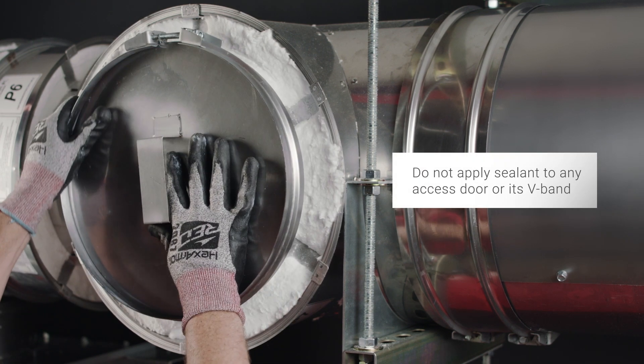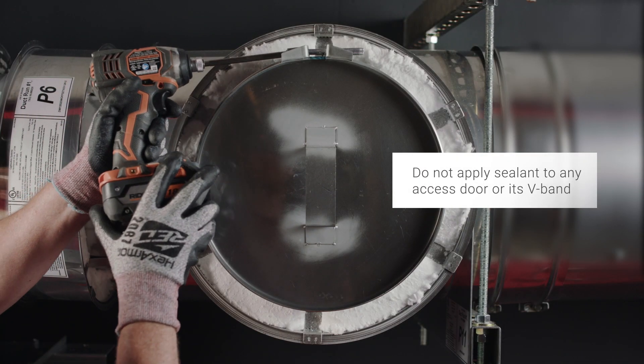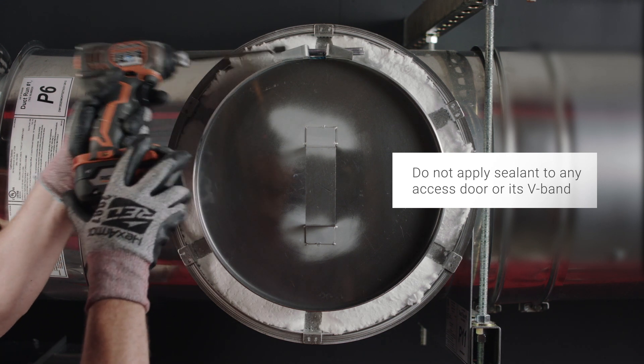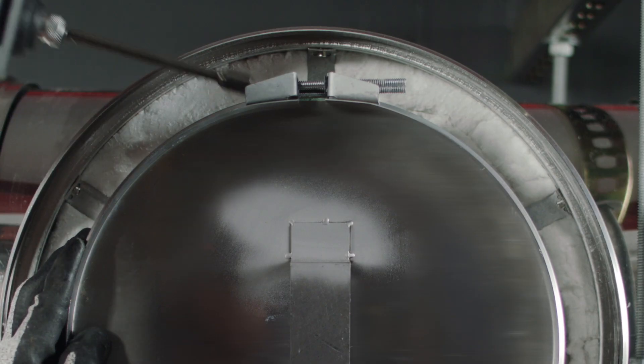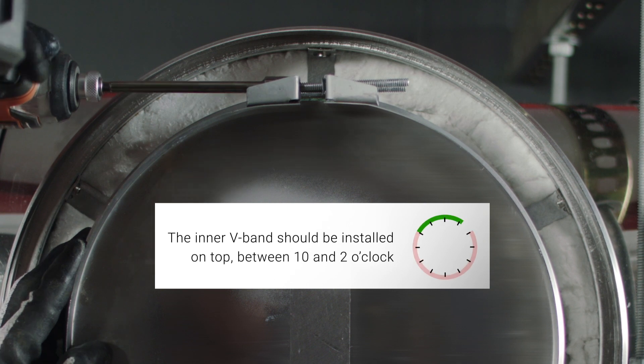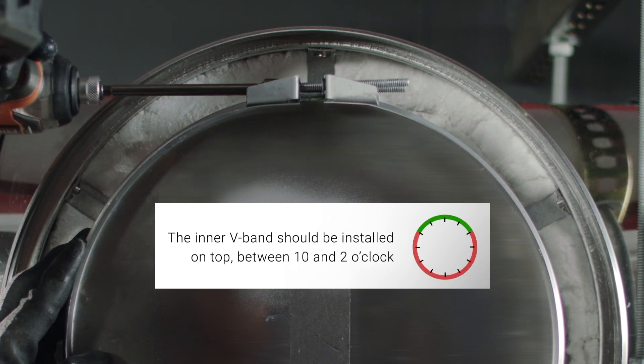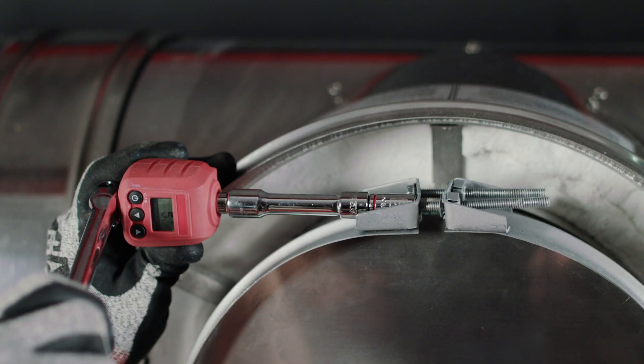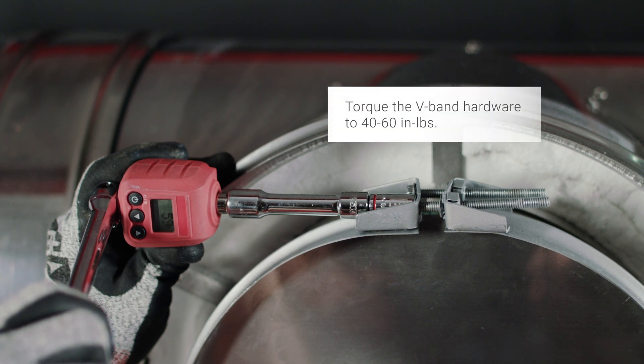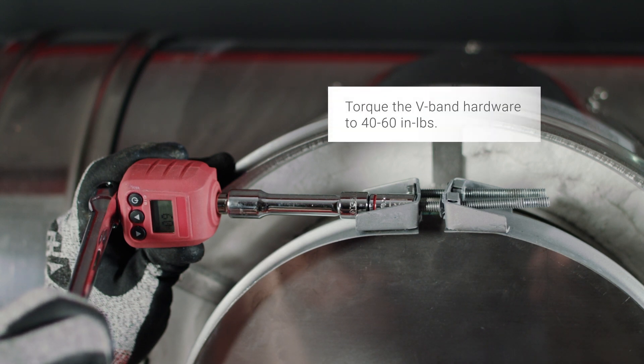To facilitate future access, do not apply sealant to the V-band on any access door. The V-band hardware should be located on the top side of the access door between 10 and 2 o'clock. Tighten the V-band hardware to a final torque between 40 and 60 inch-pounds.